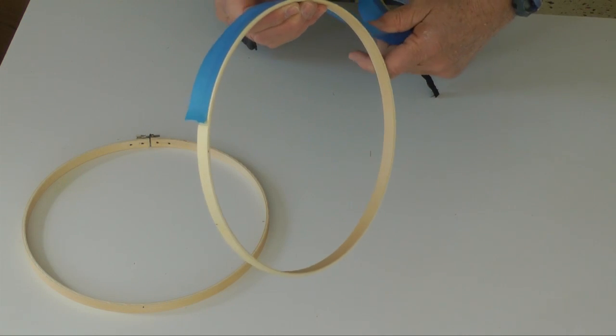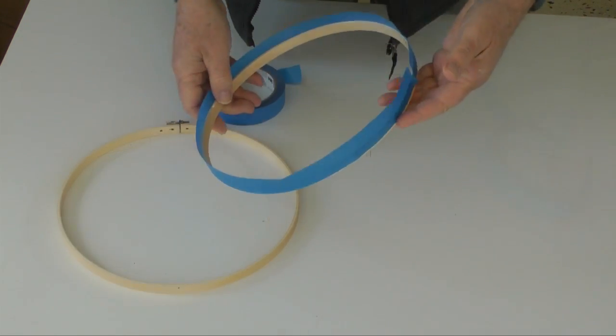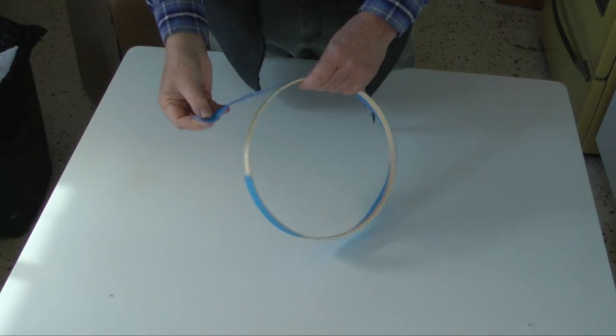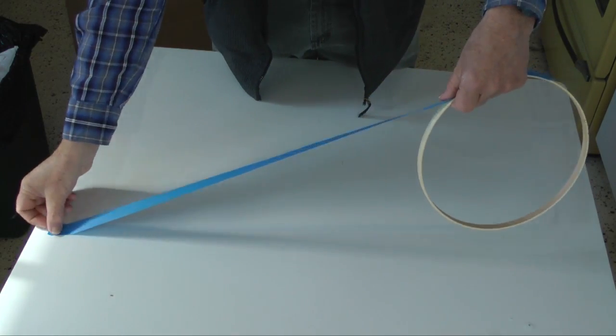Wrap a piece of masking tape around the hoop, butting the ends. Then remove the tape, tack it to a tabletop, and measure its length.